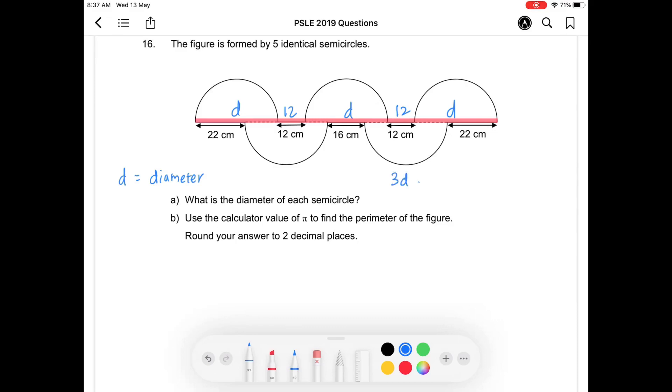So we have 3D plus 12 plus 12 is equal to 3D plus 24. This is the equation for the dimension of the red line. Now I'm going to make use of the two semicircles below. But before that, let me just remove this. Cancel this to 12 away.